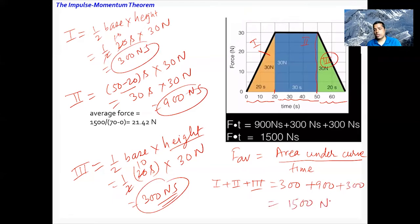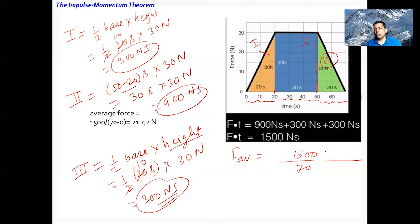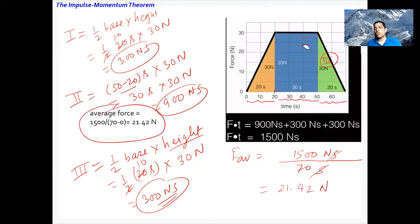The total area under the curve is 1500 newton-seconds. The total time is 70 seconds. Dividing 1500 by 70 gives approximately 21.42 newtons — that's the average force, which falls somewhere in the middle of the graph.